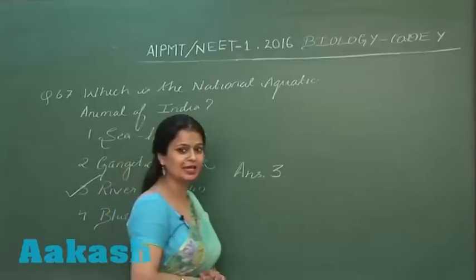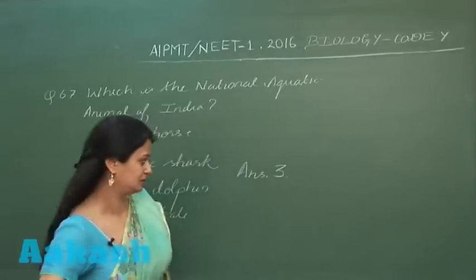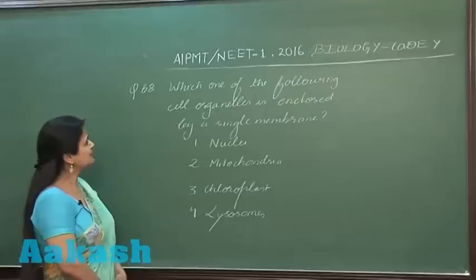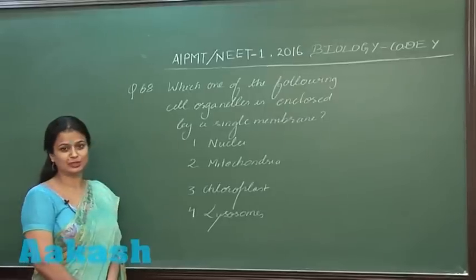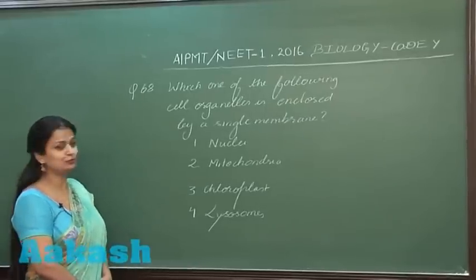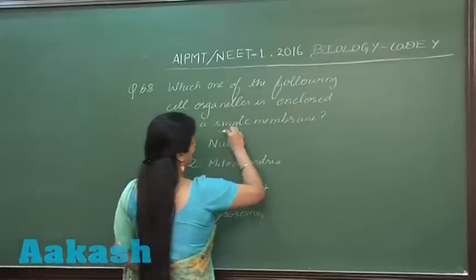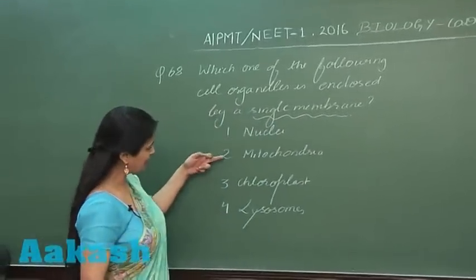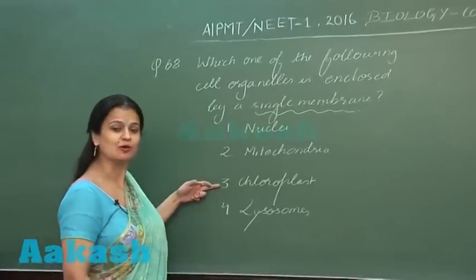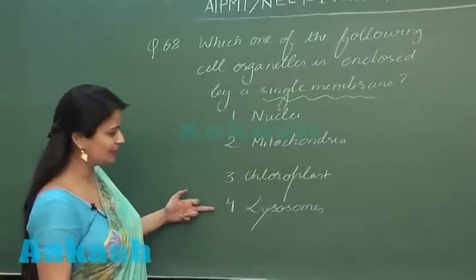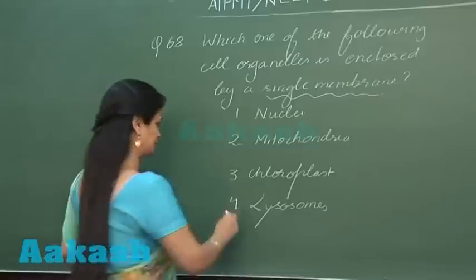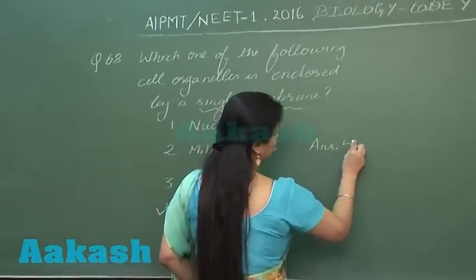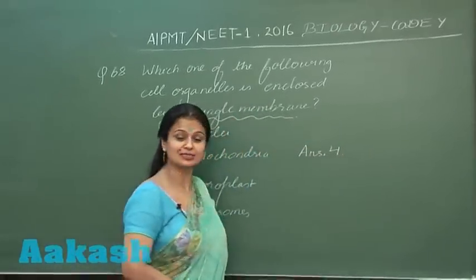Question number 68 is a very simple question related to cell biology. We have to look for a cell organelle which has a single membrane. Nucleus, mitochondria, and chloroplasts all have double membranes. The single membrane organelle is the lysosome. So the right answer for this question is option number 4.